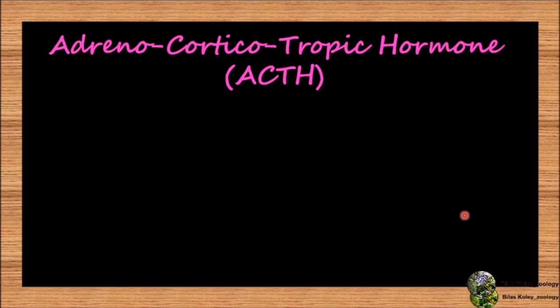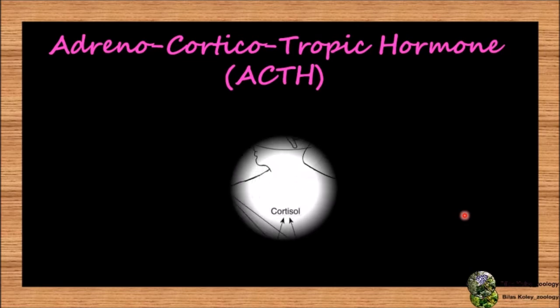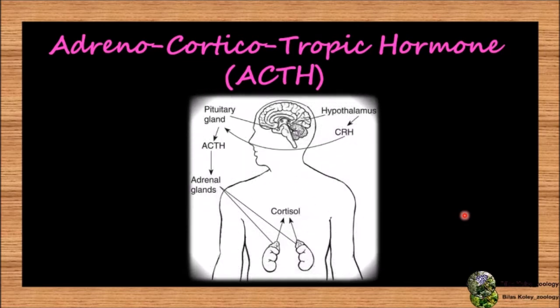Now, adrenocorticotrophic hormone, that is ACTH — it is polypeptide in nature. It increases secretion of corticoids, especially glucocorticoids, from the adrenal cortex.